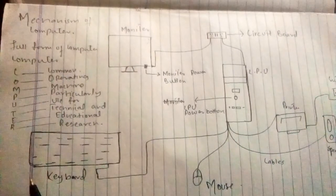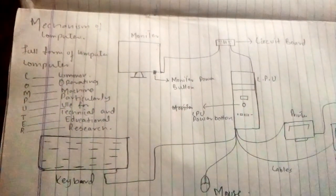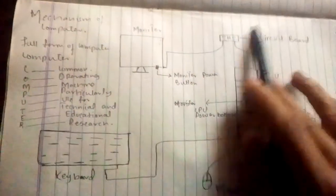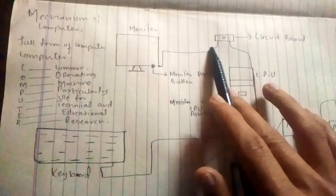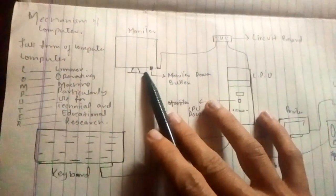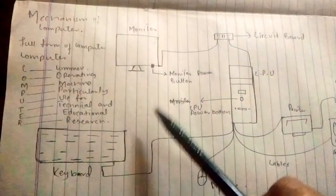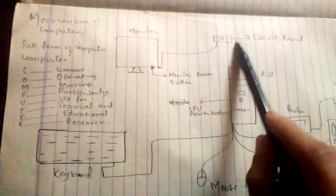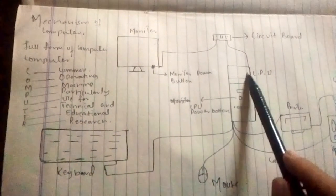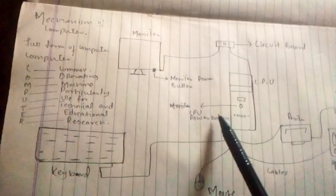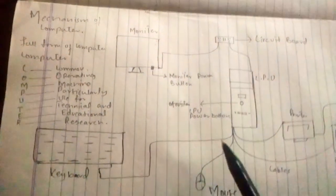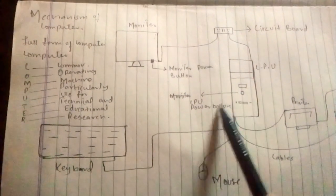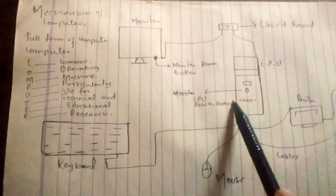Now we will turn to the mechanism of the computer — how the computer works. As you can see, this is the circuit board, and there is a cable connected to the monitor. This is the monitor power button, and one cable is connected to the CPU. This is the CPU power button.